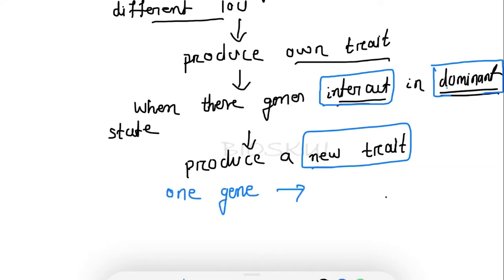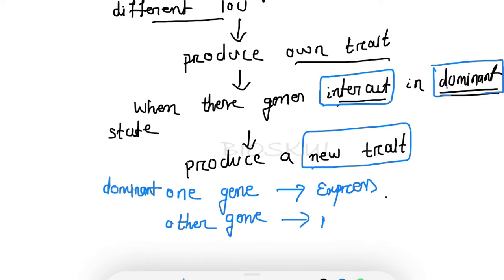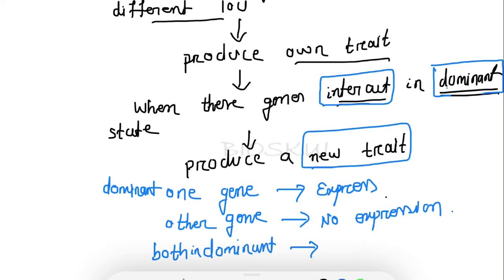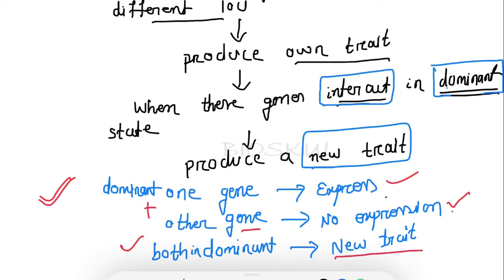In supplementary gene interaction, one gene expresses its trait independently. But the other dominant gene has no expression on its own. However, when both genes are present in dominant form and interact with each other, that results in a new trait. So: the dominant form of one gene expresses a character independently, the other dominant gene has no expression alone, but together they produce a new trait.